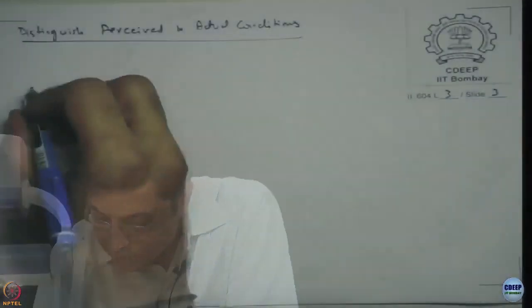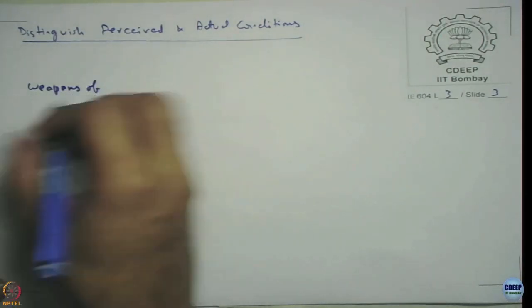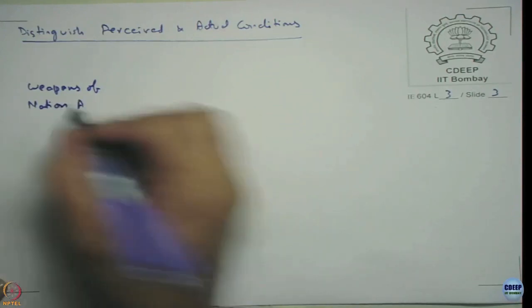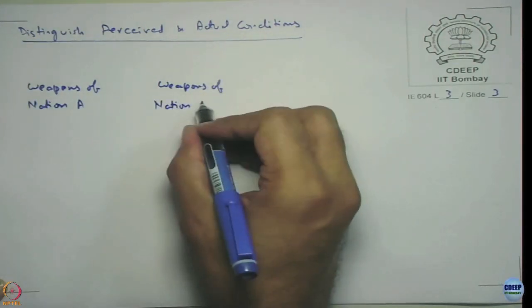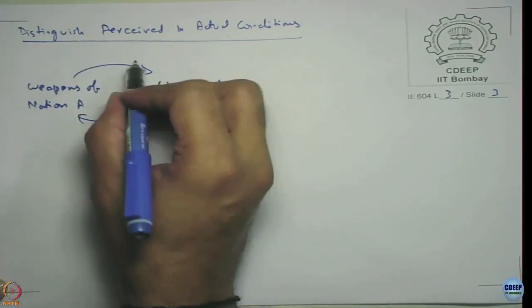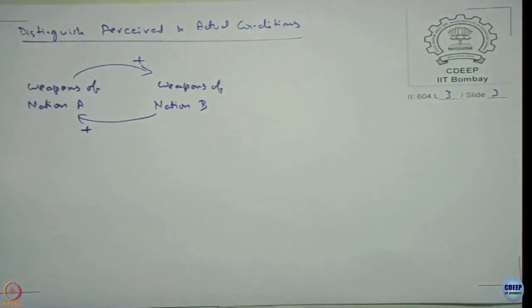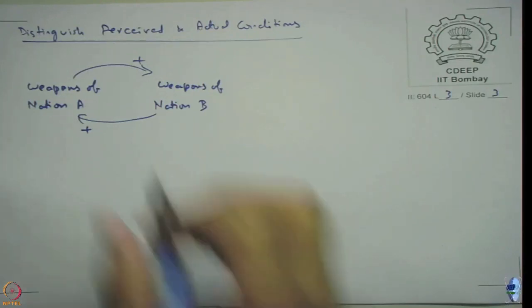A classical example here could be an arms race. As one country gets more weapons, its rival country is also going to increase its weapons, and so on and so forth. We call this the arms race or weapons race. We usually write it as: weapons of nation A and weapons of nation B. As nation A gets more weapons, nation B is also going to get weapons; nation B gets more weapons, nation A gets more weapons, and it keeps going.